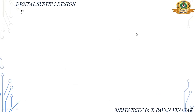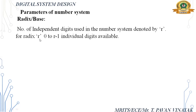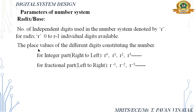Coming to the parameters of a number system: the first parameter is the radix or base — the number of independent single digits in the system, usually denoted r. For the decimal system, the radix is 10 because we have values 0 to 9, a total of 10 values. For radix r, individual digits available are 0 to r minus 1, and the place values are r power 0, r power 1, and so on, from right to left.